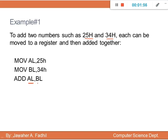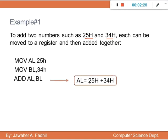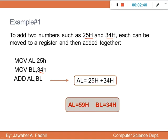If we want to store the result in BL instead, we write ADD BL, AL. Now, what is the value of AL after executing ADD AL, BL? AL equals 25h (the previous destination value) and BL equals 34h. After execution, AL will be the sum of both values, which is 59h. The value of BL has no change — it stays the same.